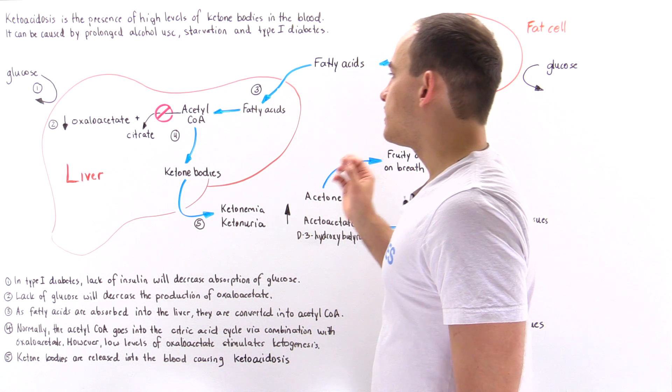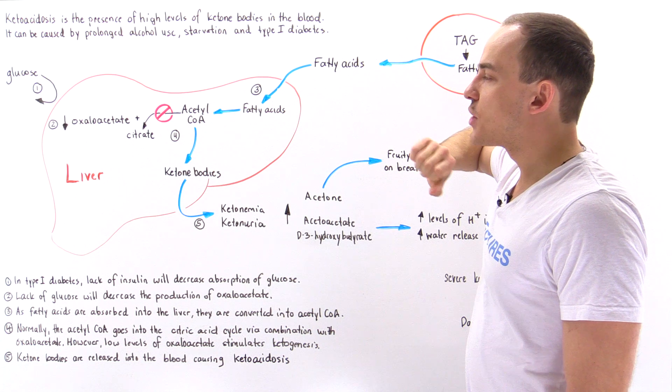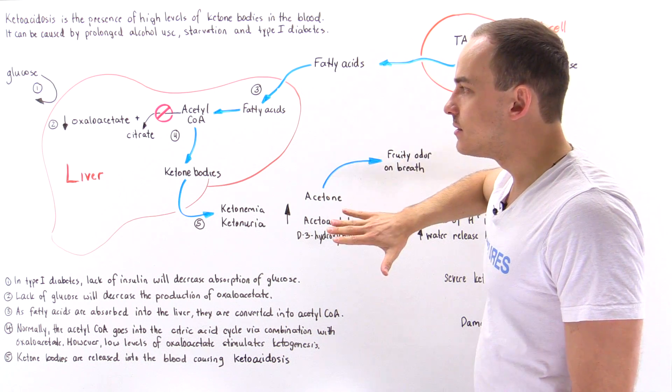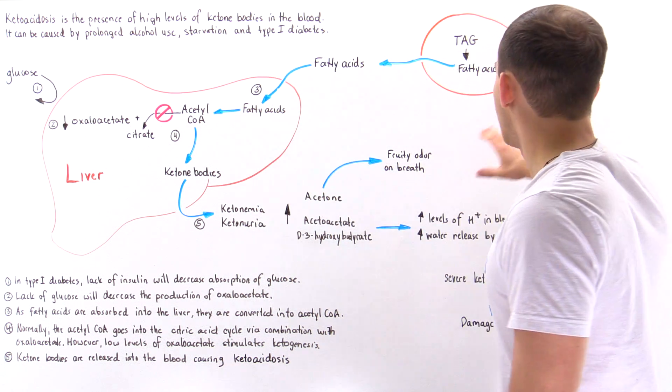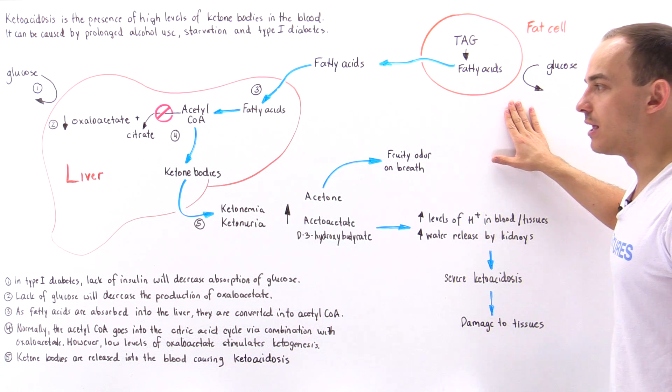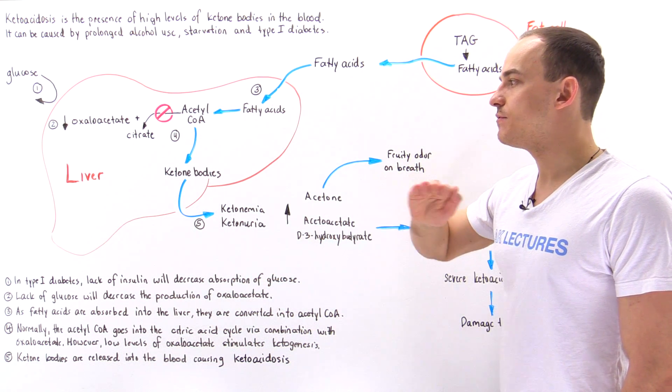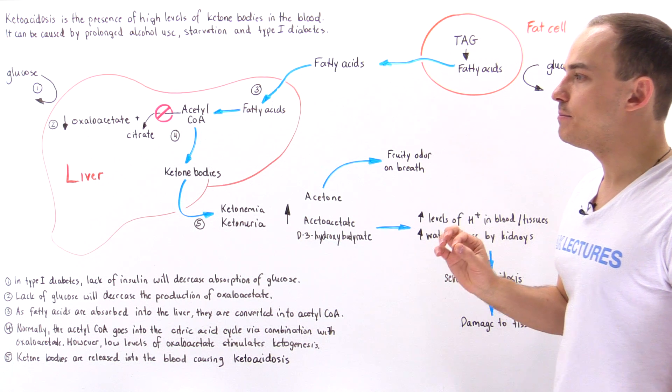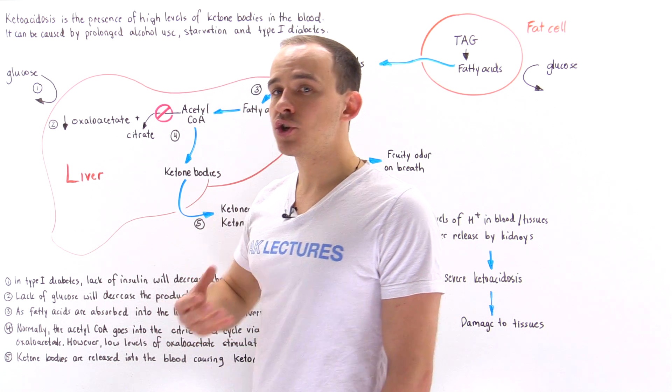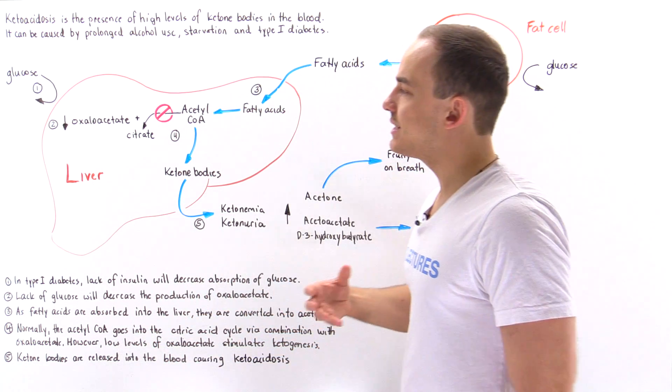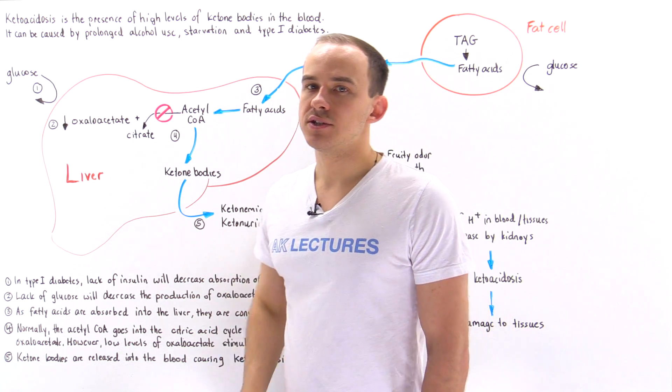The takeaway lesson here is in type 1 diabetics, if they don't take the insulin, they cannot regulate the absorption of the glucose by these liver cells and by these adipose cells. And so this process will lead to increased levels of ketone bodies inside the blood because the cells of our body will not be able to use the ketone bodies quickly enough, and so we're going to get a buildup of these ketone bodies in the blood leading to ketoacidosis.